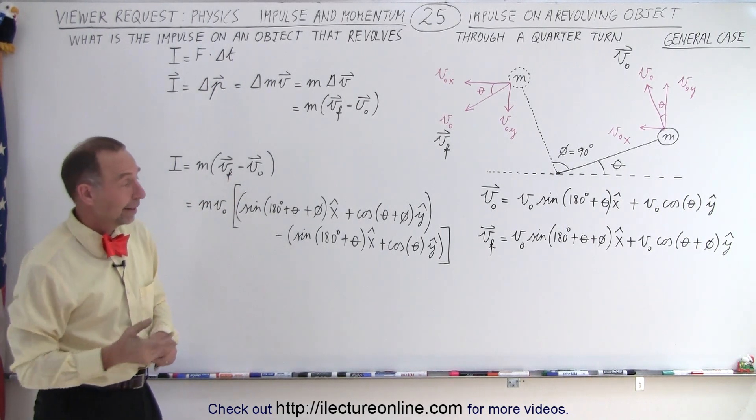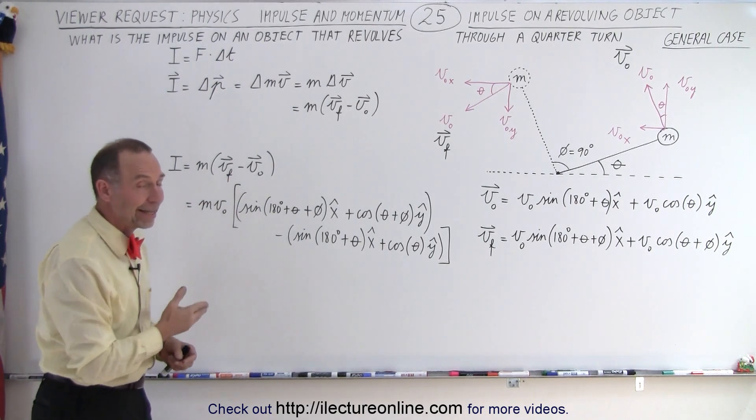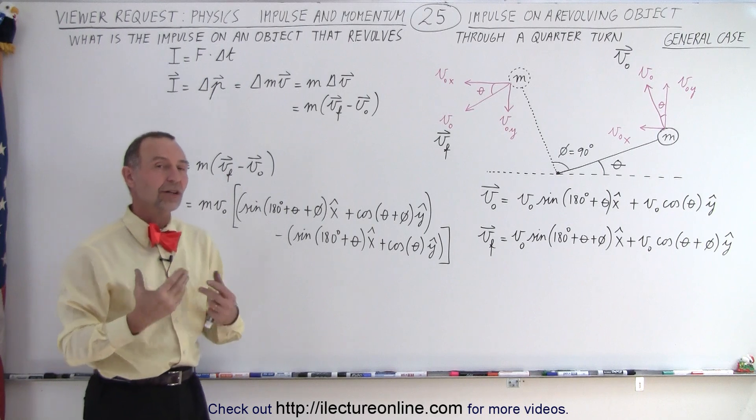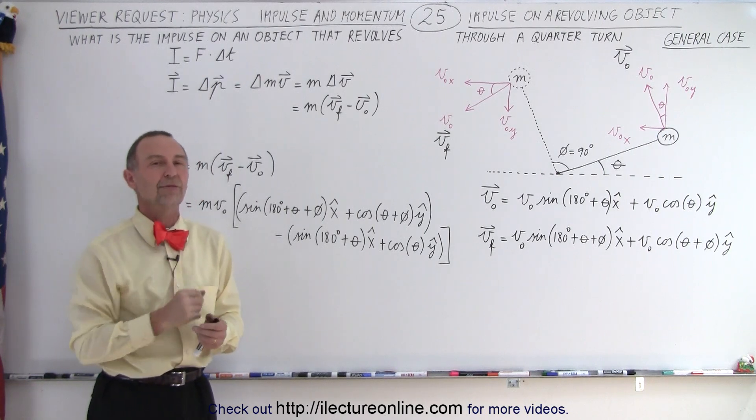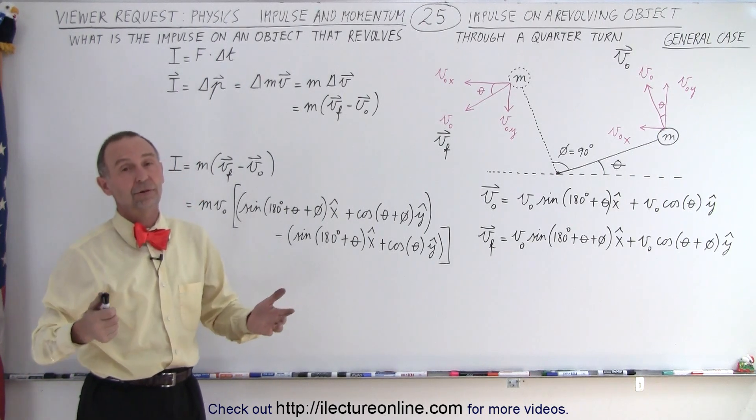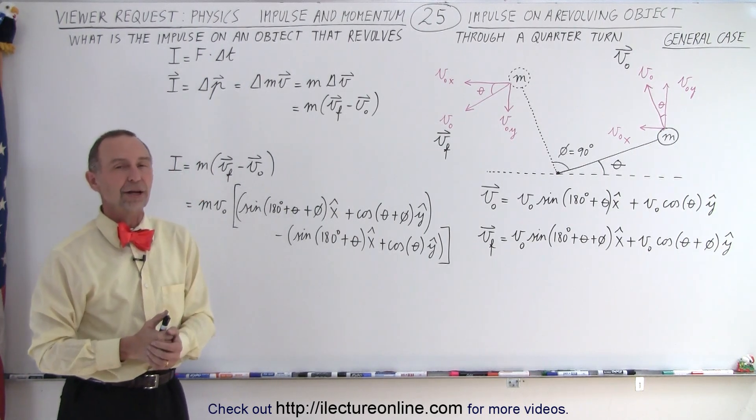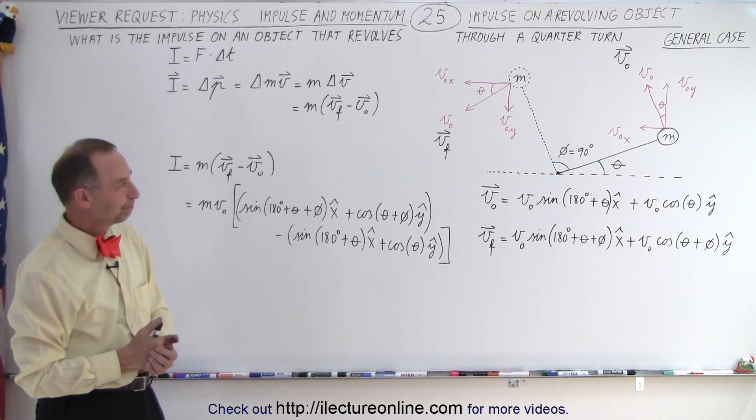And that is how we find the general case of the impulse of a revolving object, and that is how it's done.